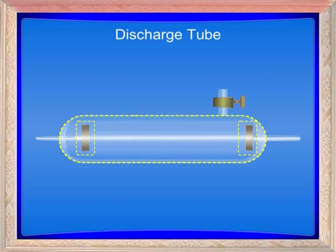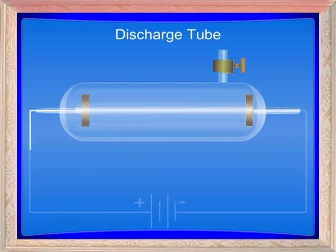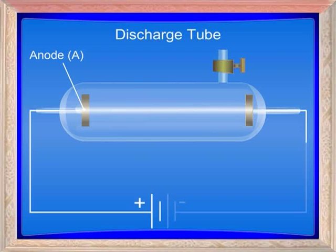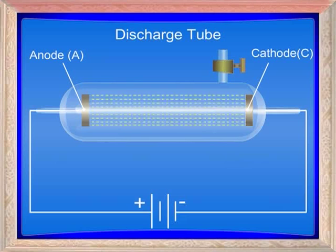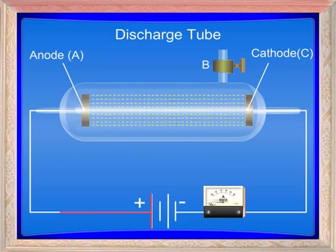A discharge tube is made up of glass with two electrodes fused into the tube. The electrode connected to the positive terminal, which is the higher potential, is called anode (A), and the electrode connected to the negative terminal, which is the lower potential, is called cathode (C). The pressure inside the discharge tube is varied by connecting the inlet or outlet (B) to the vacuum pump.